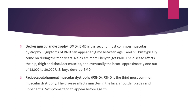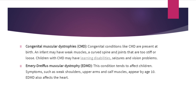Facioscapulohumeral muscular dystrophy is the third most common muscular dystrophy. The disease affects the muscles in the face, shoulder blades, and upper arms. Symptoms tend to appear before age 20.